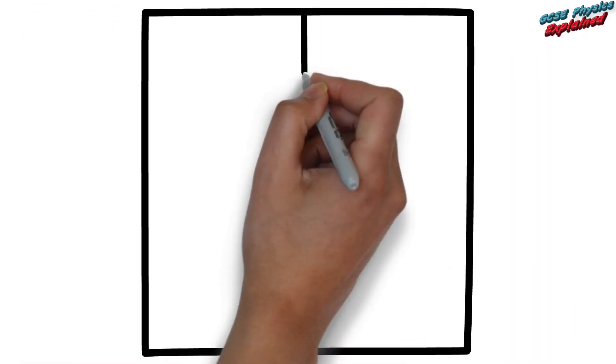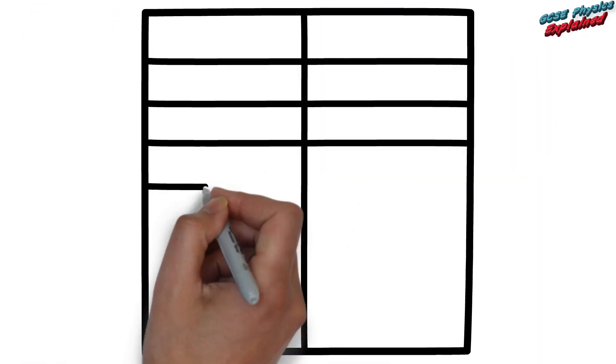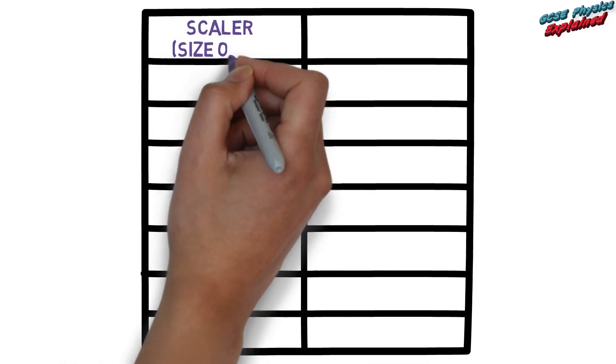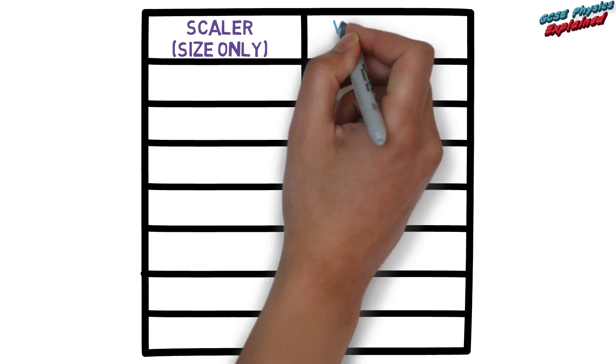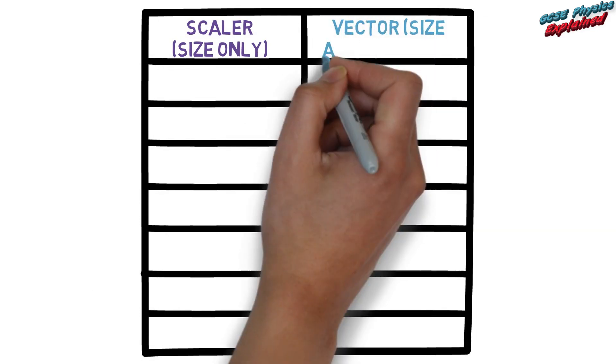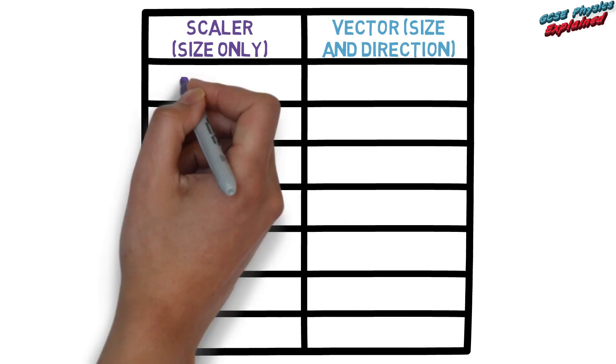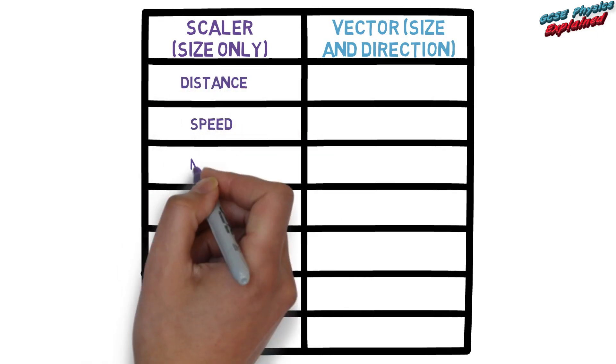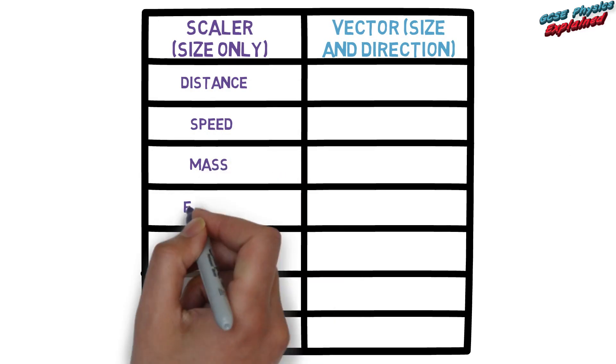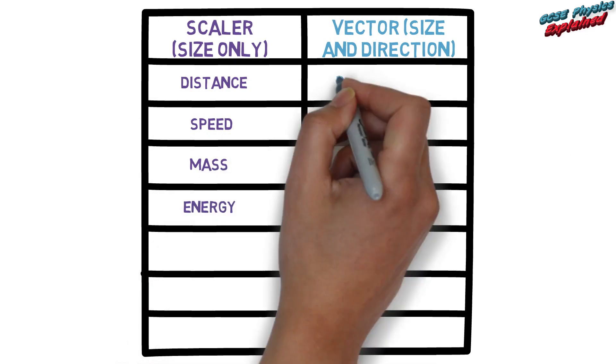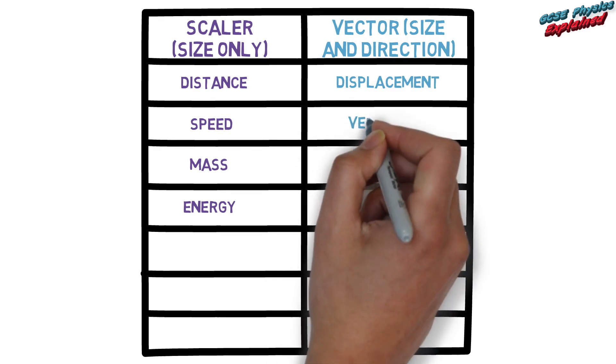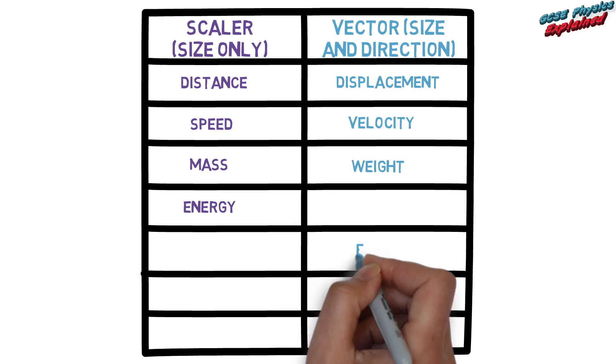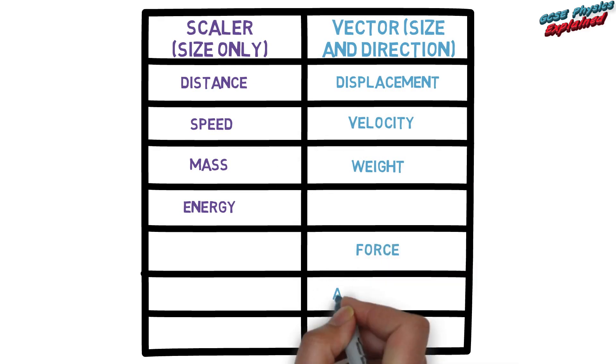Here are some examples of scalar quantities and vector quantities. Scalar quantities have size only: distance, speed, mass, energy. Vector quantities have size and direction: displacement, velocity, weight, force, acceleration, momentum.